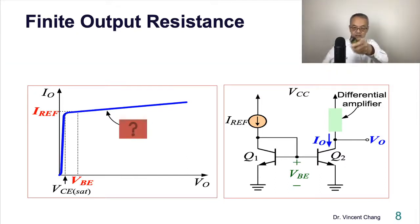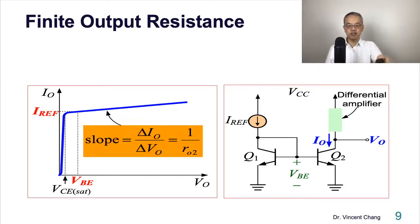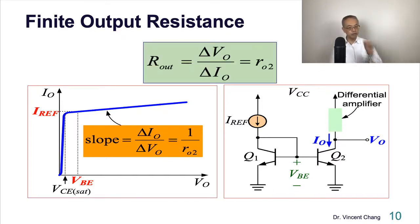So now, what's the slope? The slope is not zero, which means the output resistance is not infinite. The slope means delta IO divided by delta VO. The inverse of the slope is the output resistance, delta VO divided by delta IO, which is the output resistance of the individual transistor Q2. The finite imperfection of the current mirror is caused by the output resistance, which comes from the physical base width modulation effect of the bipolar transistor, of the output transistor Q2.